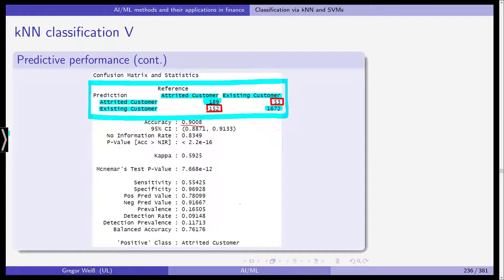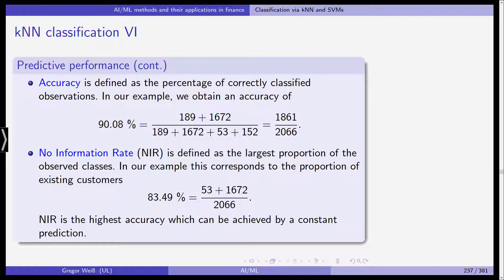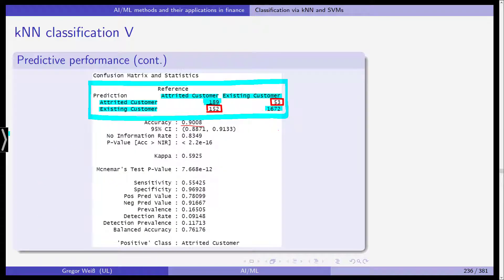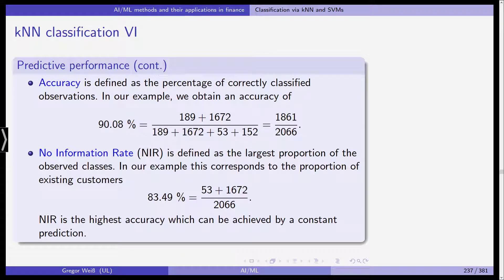We can also see the accuracy, a confidence interval for accuracy, the no information rate, and Cohen's kappa among other metrics. Accuracy is defined simply as the percentage of correctly classified observations. In our example we have 189 plus 1672 divided by the total number of observations, giving us an accuracy of 90 percent.